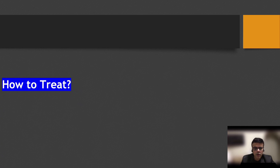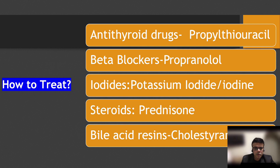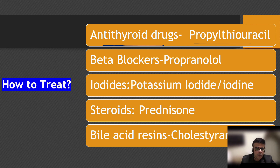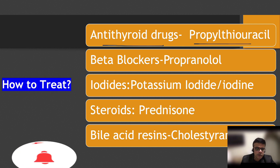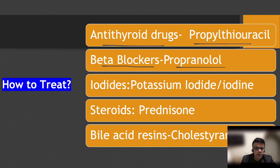To treat thyroid storm, we employ different strategies. Antithyroid drugs like propylthiouracil (PTU) cause decreased synthesis and decreased conversion of T4 to the metabolically active T3 by blocking TPO, the thyroid peroxidase enzyme implicated in thyroid hormone synthesis. Beta blockers like propranolol can decrease the action of adrenaline. Iodides such as potassium iodide can also lead to decreased synthesis of thyroid hormone, helping to decrease the manifestations of thyroid storm.